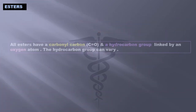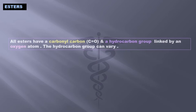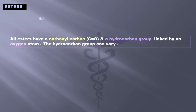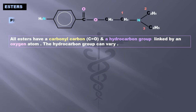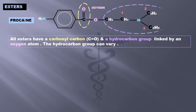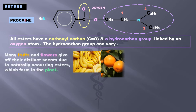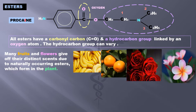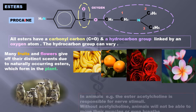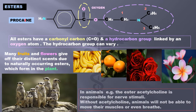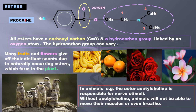All esters have a carbonyl carbon (C=O) and a hydrocarbon group linked by an oxygen atom. The hydrocarbon group can vary. This is the molecular structure of procaine with the carbonyl group, oxygen in between, and the hydrocarbon group. Many fruits and flowers give off distinct scents due to naturally occurring esters which form in the plants. In animals, the ester acetylcholine is responsible for nerve stimuli — without acetylcholine, animals will not be able to move their muscles or even breathe.